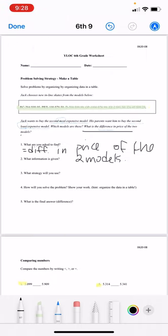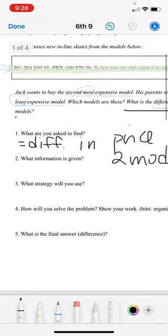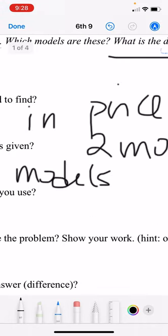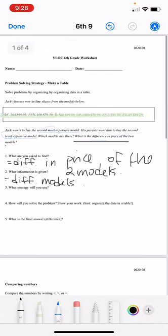Number two. What information is given? Well, we're given the different models and their prices, right? That's our data. Okay, so different models. Oh my gosh. Okay, models and their prices.